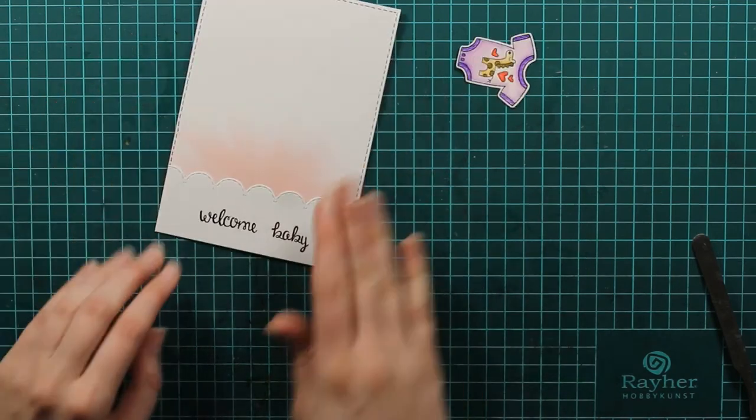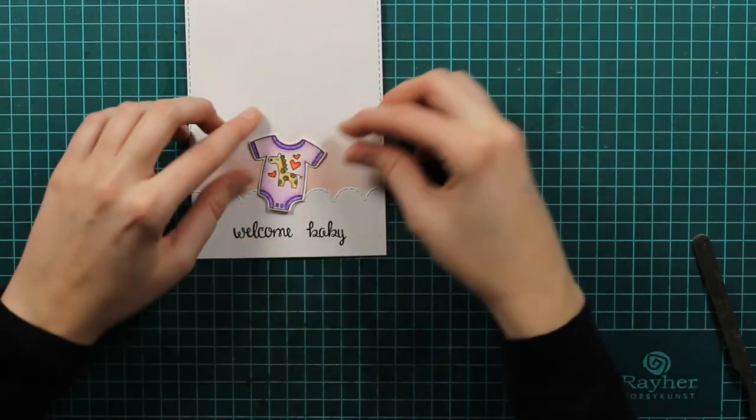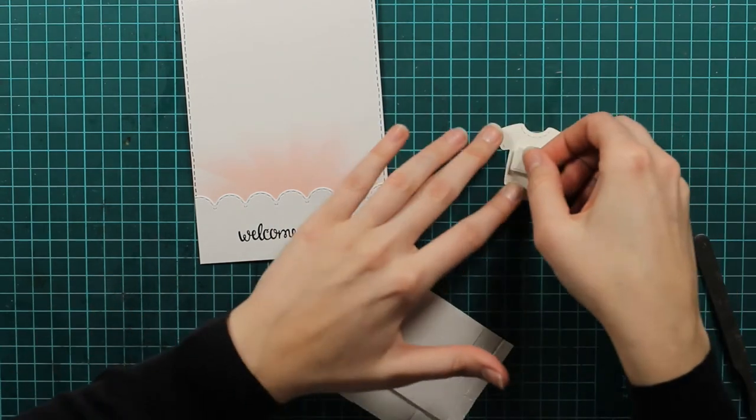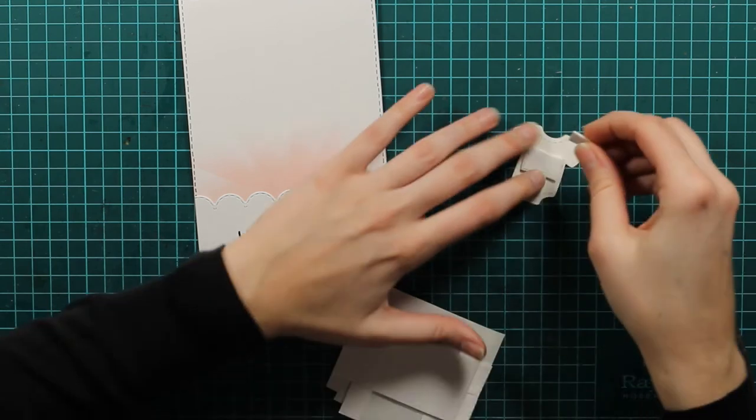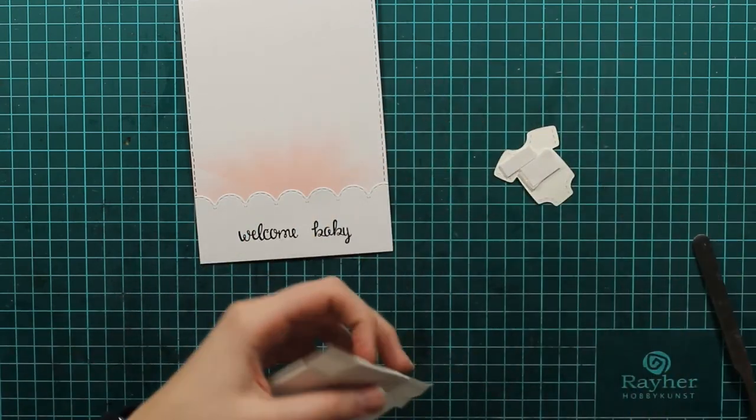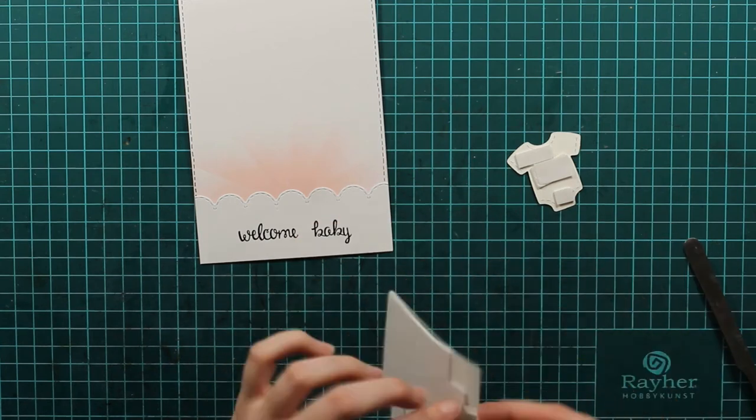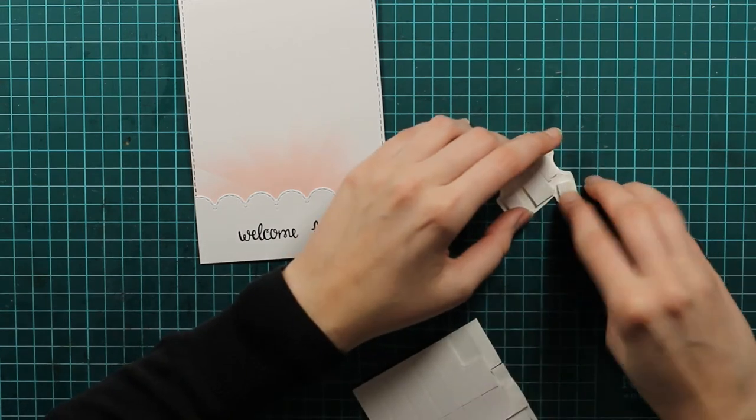I will use my double-sided tape to glue down the bottom white piece and then I will use my foam rectangle pieces to glue down my onesie. Because we of course need some dimension and this is the easier way for me to make the dimension I want.